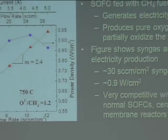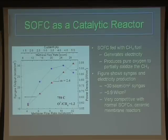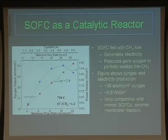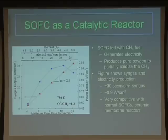This is an example of the SOFC as a catalytic reactor. Starting with a non-hydrogen fuel — in this case methane — you partially oxidize the methane to produce hydrogen and carbon monoxide again, producing syngas. Shown here, the methane flow rate in the cell is on the x-axis. In red, plotted on the left, is your syngas output: as you increase the methane flow rate, you increase your output of hydrogen and carbon monoxide. Plotted on the right is the power density of your fuel cell — so you're increasing the electrical output while producing useful fuel from the methane. This is very competitive with normal SOCs and ceramic membrane reactors.